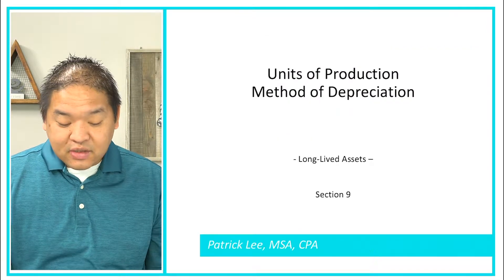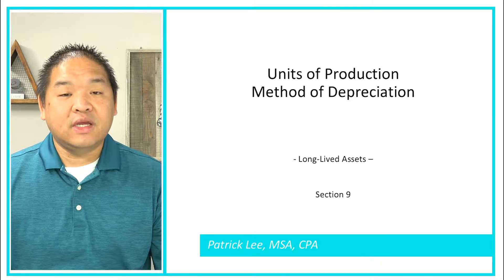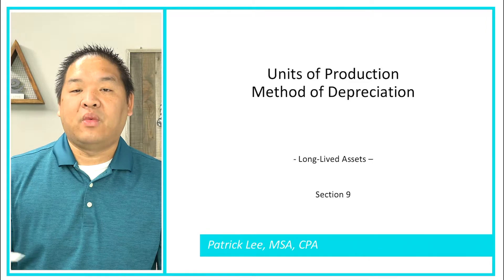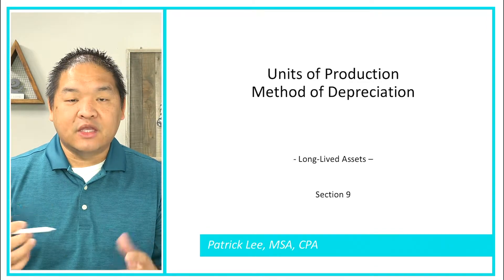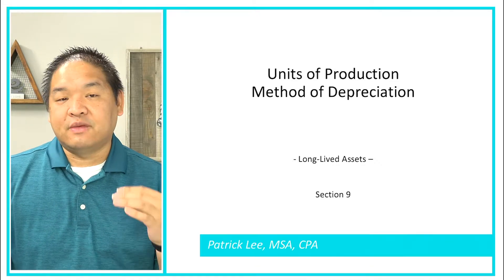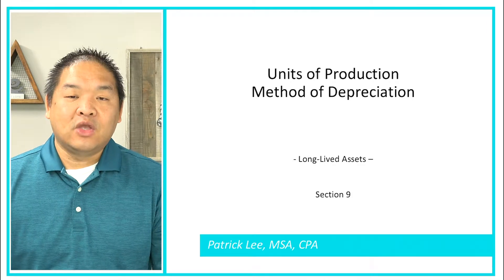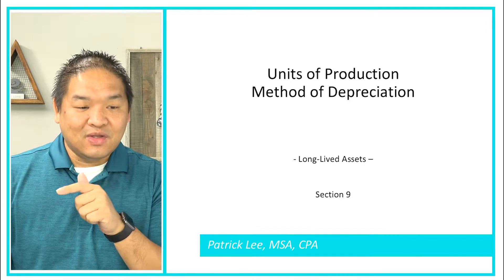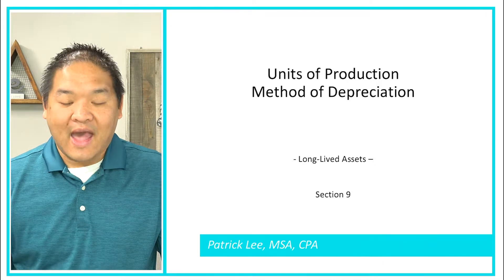That is a look at the units of production method. It's pretty easy once you've calculated your per-production-unit rate. You simply multiply what you used it for by that rate to get your depreciation for that year. It will fluctuate from year to year, so you'll need to make that calculation every single year until your book value hits the residual value or you dispose of the asset.